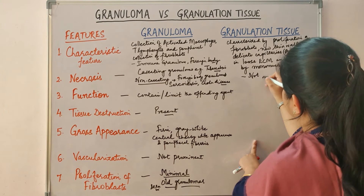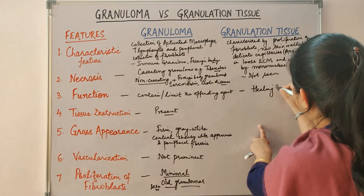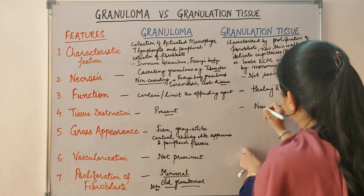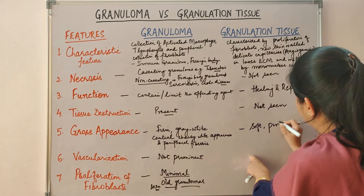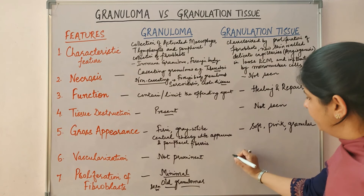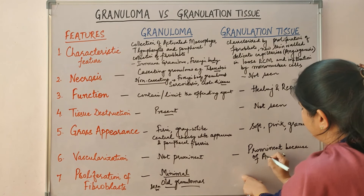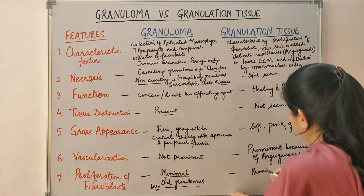Necrosis is not seen in granulation tissue. Granulation tissue is a hallmark of the healing process — it takes part in healing and repair. Tissue destruction is not seen, as it is taking part in the healing process. Gross appearance: granulation tissue has a soft, pink, granular appearance. Vascularization is prominent because of angiogenesis, and proliferation of fibroblasts is also prominent in granulation tissue.